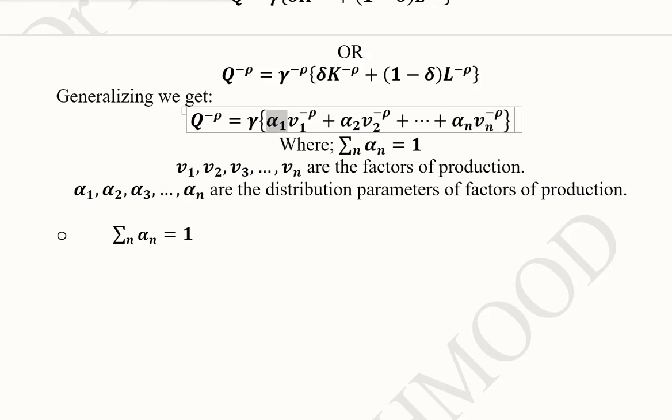These are the distribution parameters. Instead of δ, we use α₁, α₂, ..., αₙ to avoid exhausting symbols. With δ, the other parameter would be 1 - δ, leaving no notation for additional factors when we have n factors of production.